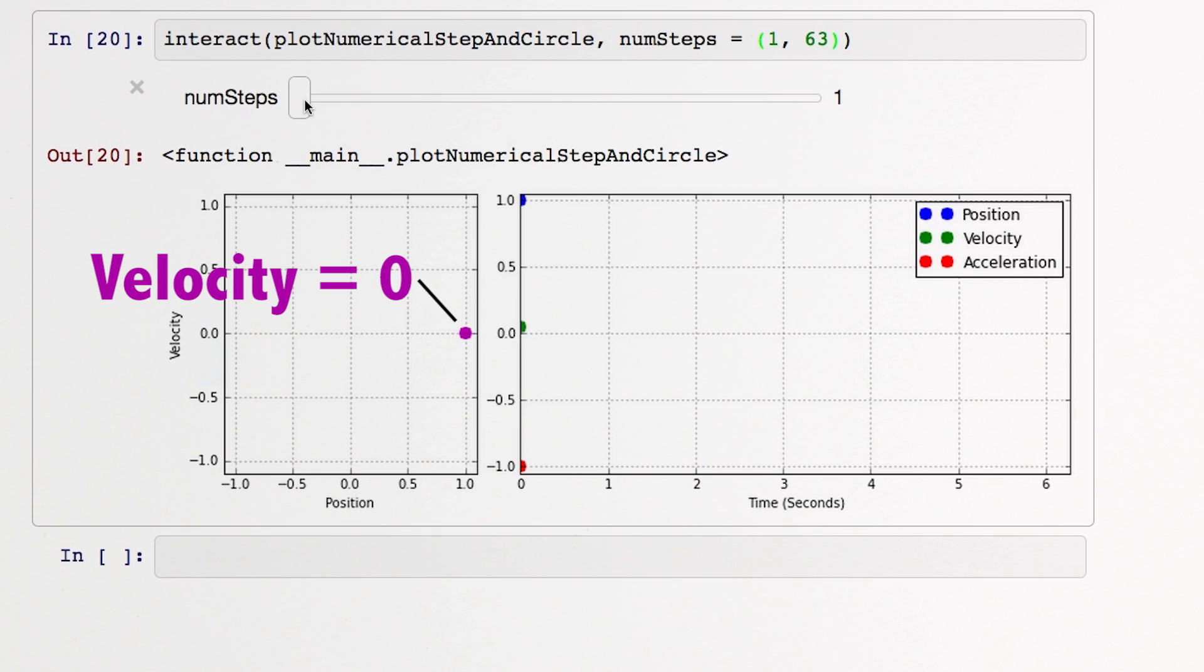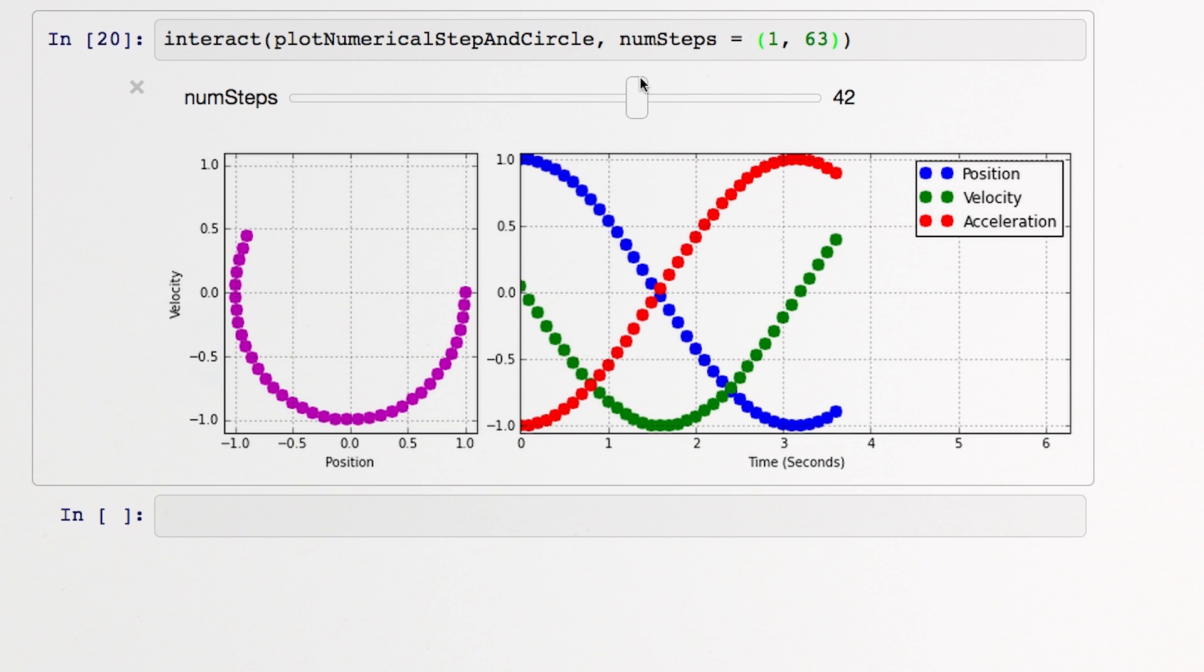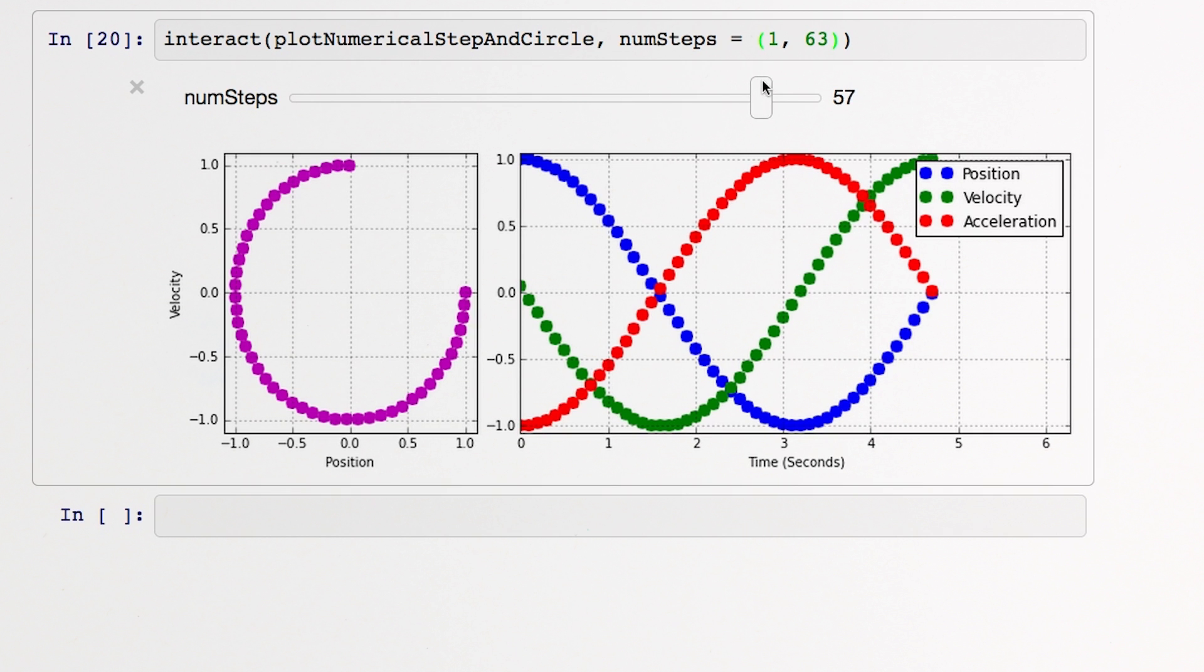The motion we set up starts on the far right side with zero velocity and a position of one. As the position decreases and our mass moves back towards equilibrium, the velocity increases in such a way that our position versus velocity graph exactly traces a circle.